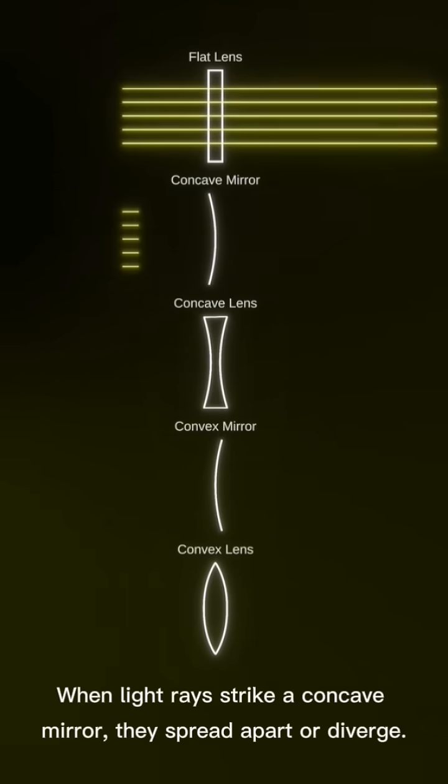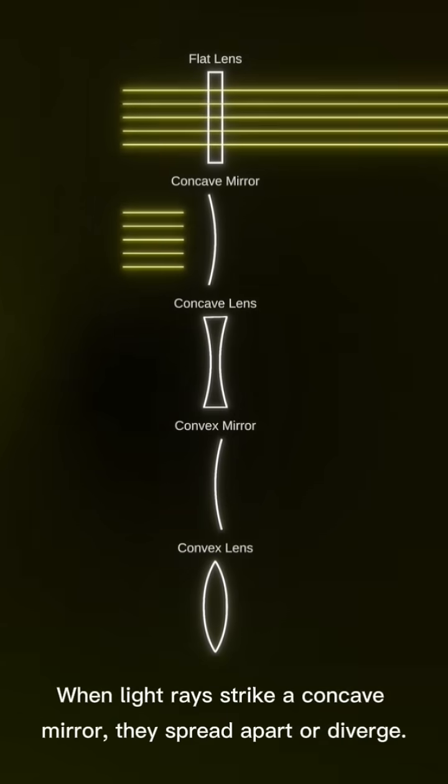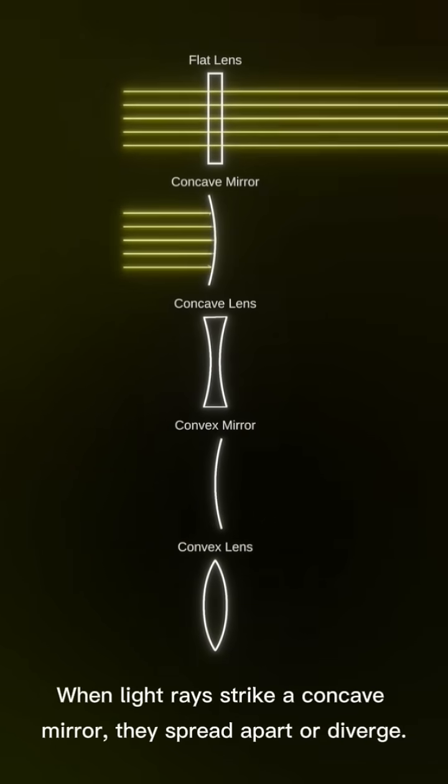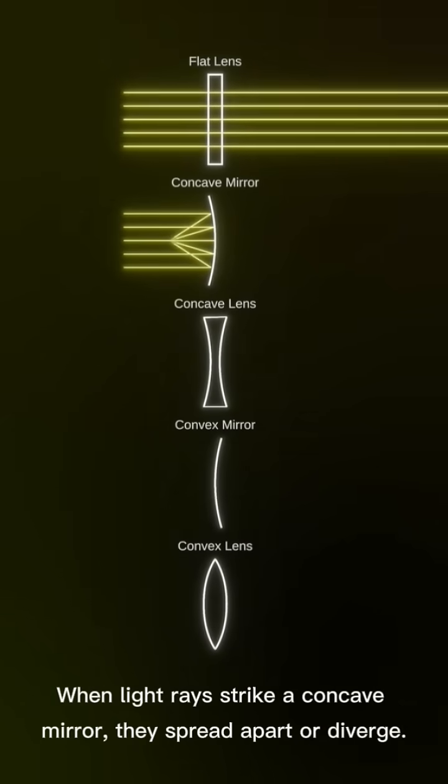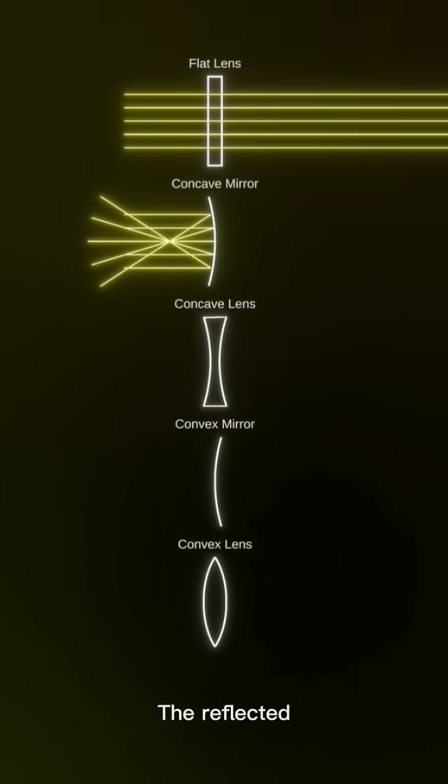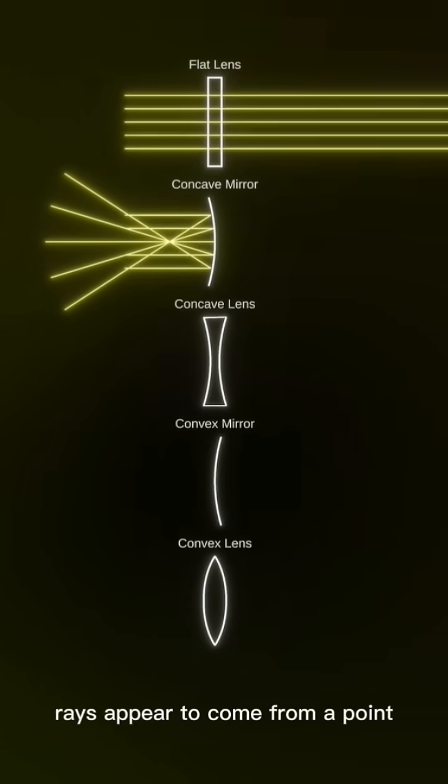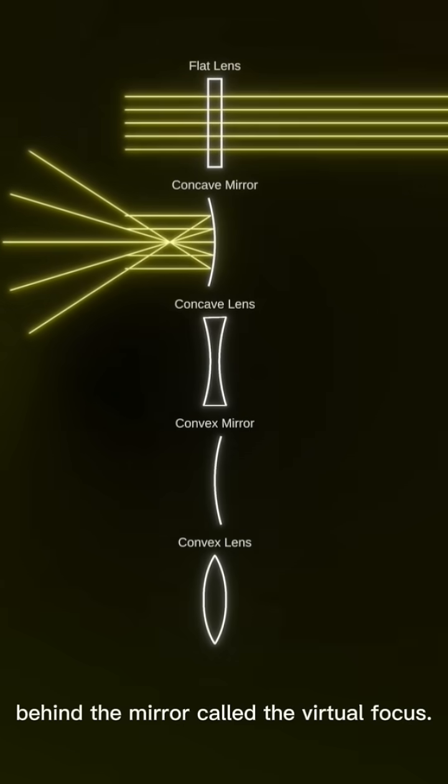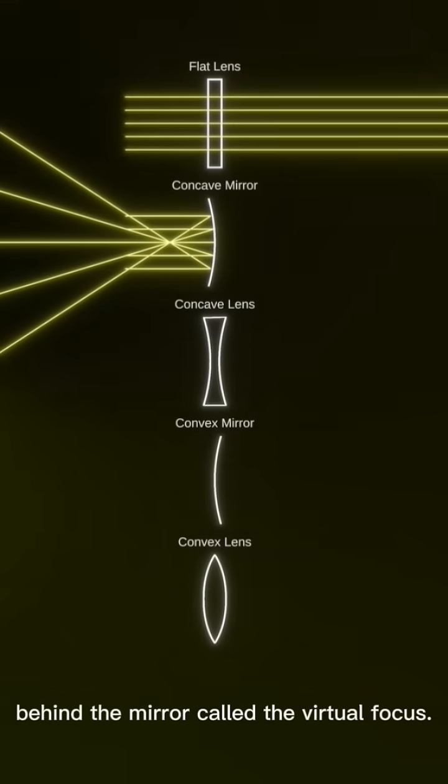Concave Mirror. When light rays strike a concave mirror, they spread apart or diverge. The reflected rays appear to come from a point behind the mirror called the virtual focus.